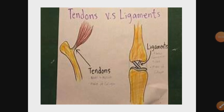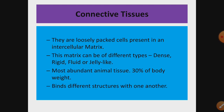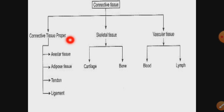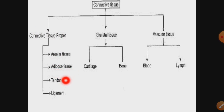Hello students, today we will learn about tendons and ligaments. Tendons and ligaments are another type of connective tissue — specifically connective tissue proper. They have a jelly matrix. In the previous class we discussed areolar and adipose connective tissue, and today we will be reading about tendons and ligaments.